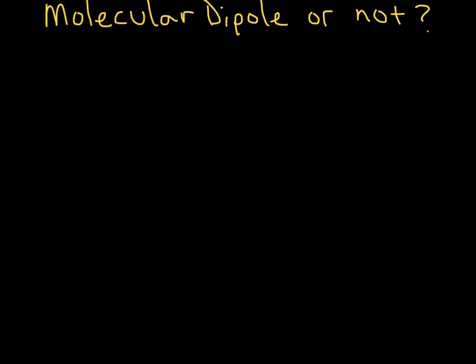What we're going to do is look at three different molecules and compare them and determine whether each one has a molecular dipole or not. The three molecules we're going to look at are carbon monoxide, carbon dioxide, and sulfur dioxide.